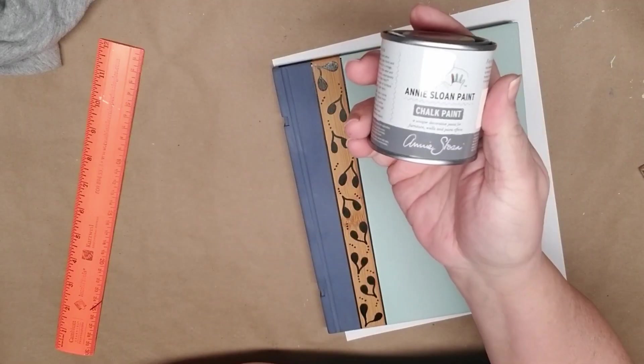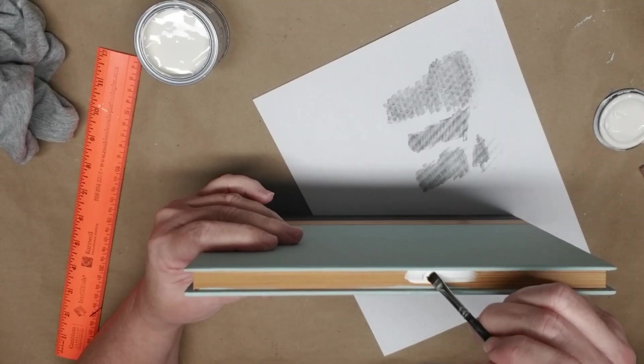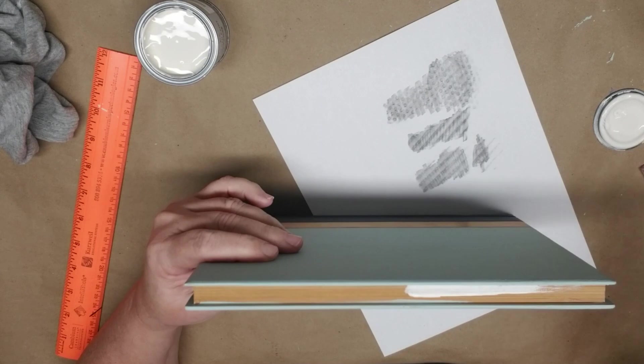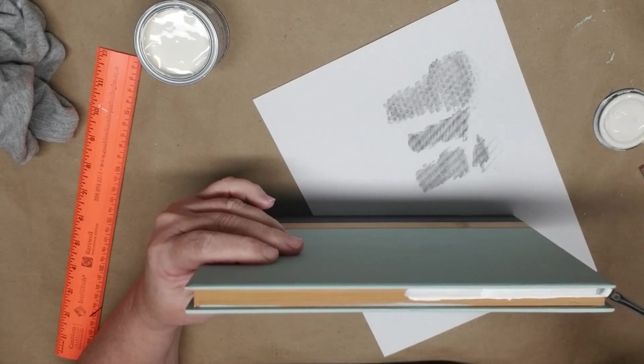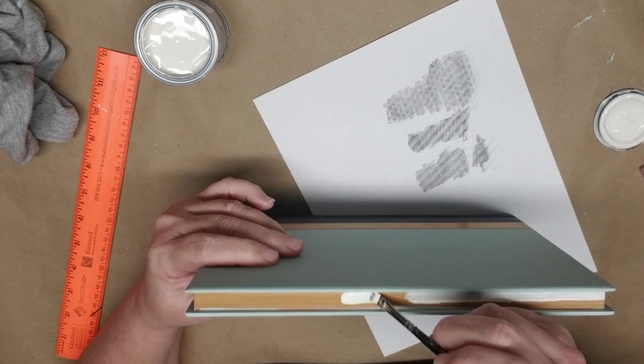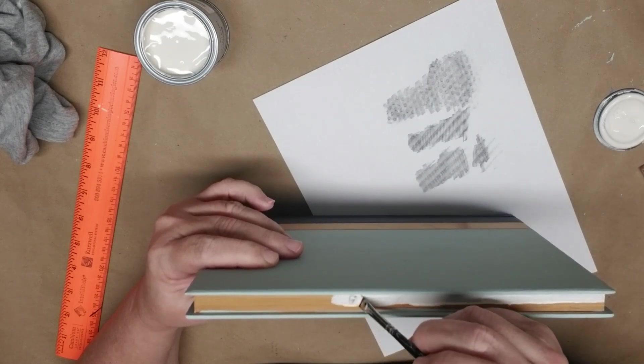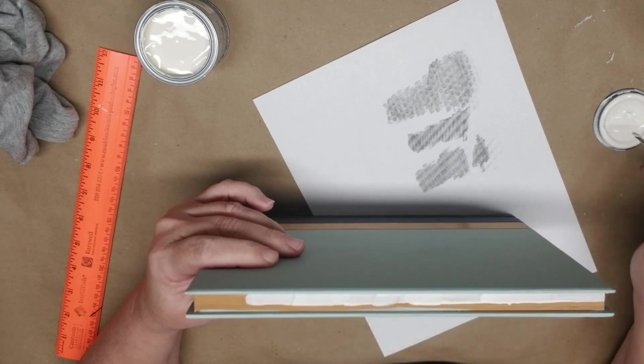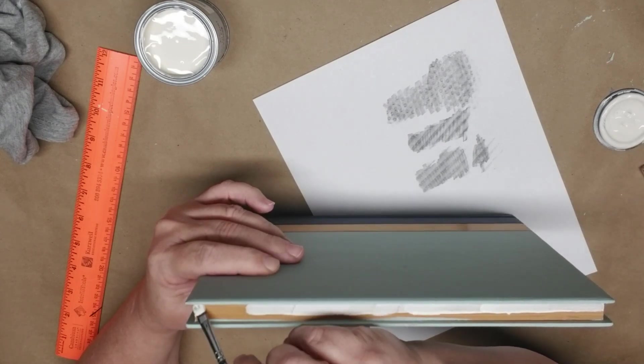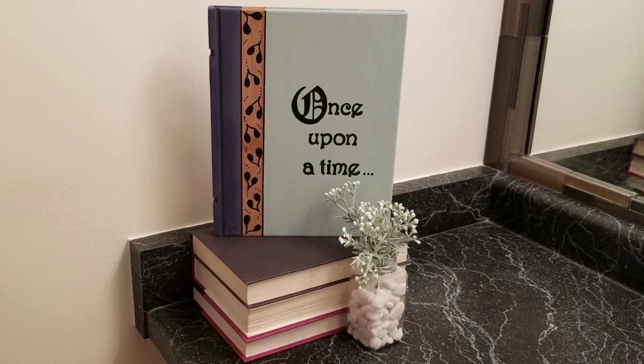The last thing is to use some of Annie Sloan chalk paint in the color Original, which is their old white, and I'm going to just paint in where the book pages would be. I think this book would look great in a library or maybe in a book nook or in a nursery in the book area. You could even hang it on the wall.